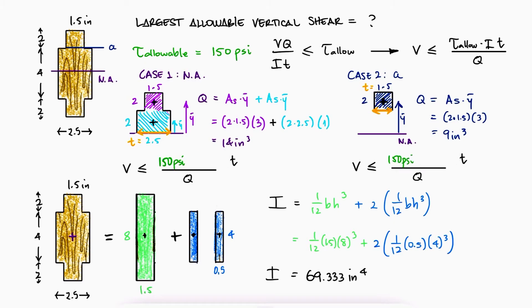Substituting the values in the V expression for both cases, we find that V shouldn't be larger than 1857 pounds for case 1 and 1733 pounds for case 2. If we want neither location to exceed the maximum allowable shearing stress, we know that the shear force cannot exceed 1733 pounds.